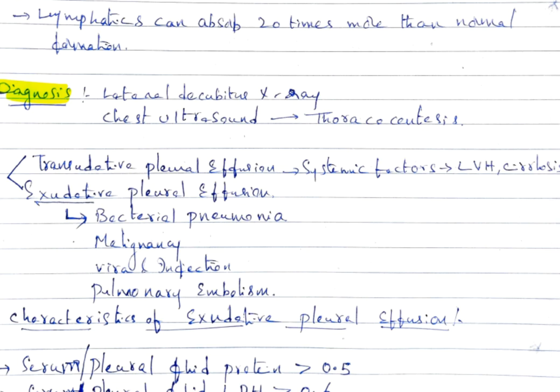Diagnosis is generally done by lateral decubitus x-ray, chest ultrasound, or thoracocentesis. Chest ultrasound-guided thoracocentesis can also be done. Pleural effusion is broadly two types: transudative and exudative. Transudative is generally due to systemic factors like LVH and cirrhosis. Exudative type is due to various causes like bacterial pneumonia, malignancy, viral infection, and pulmonary embolism.